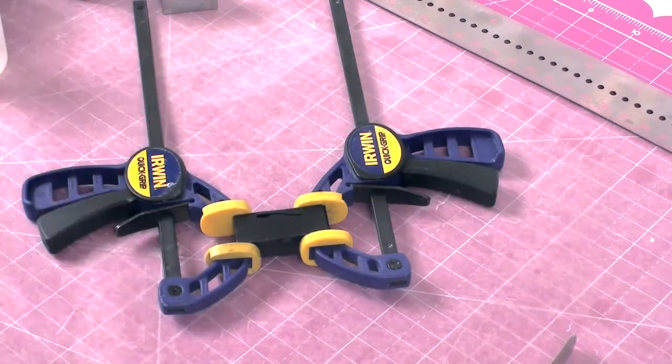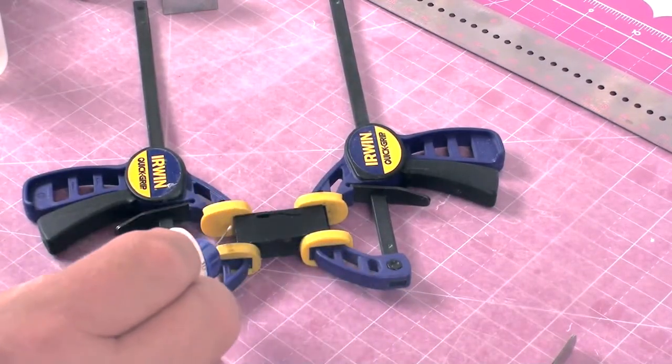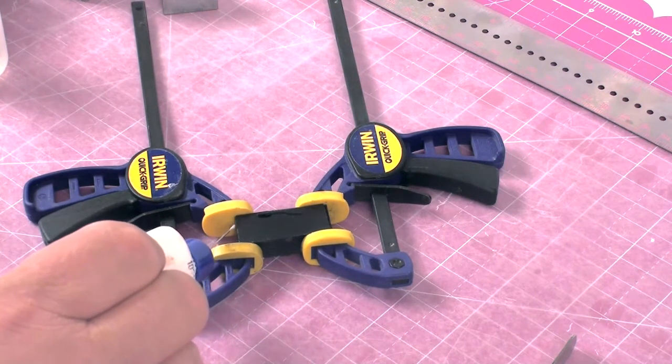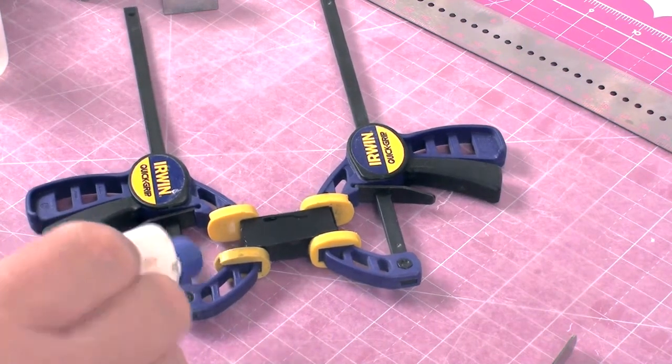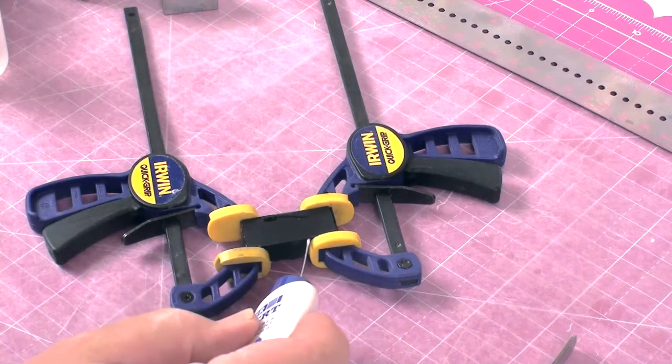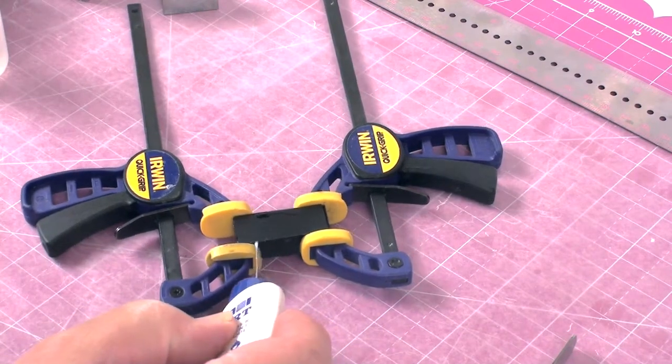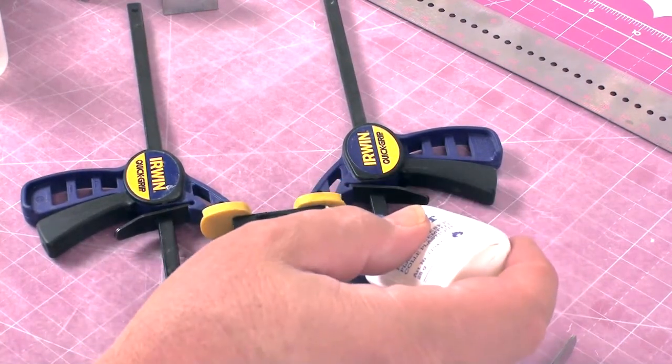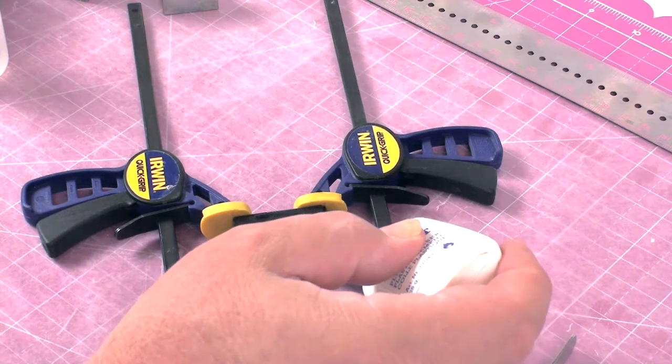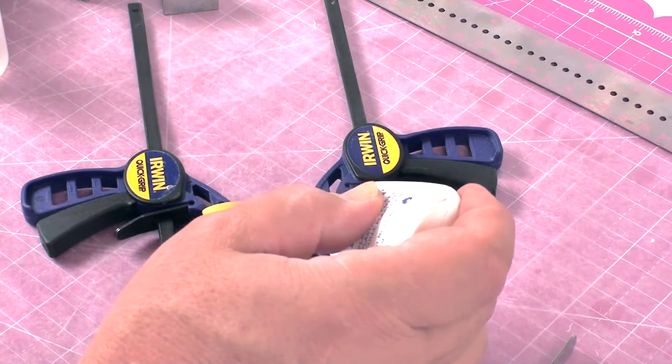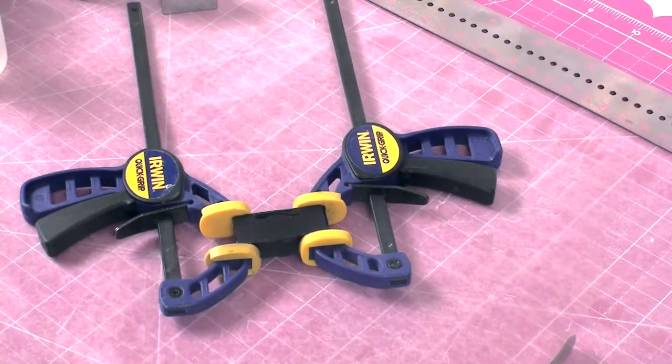I like the Fowler Expert because it has styrene in it and it performs a little filling action. It's sort of like gap filling CA. It'll actually make a fillet or a rounding of the corner and it will fill in any gaps and seal off the enclosure very well. After I take it out of the clamps, I might even put some more Fowler Expert on it just to make sure.